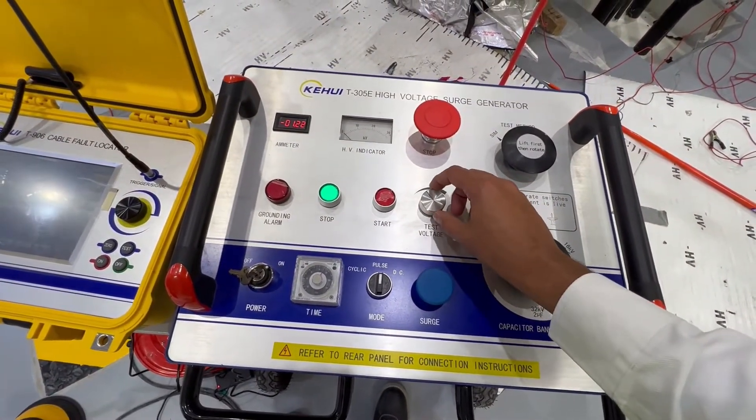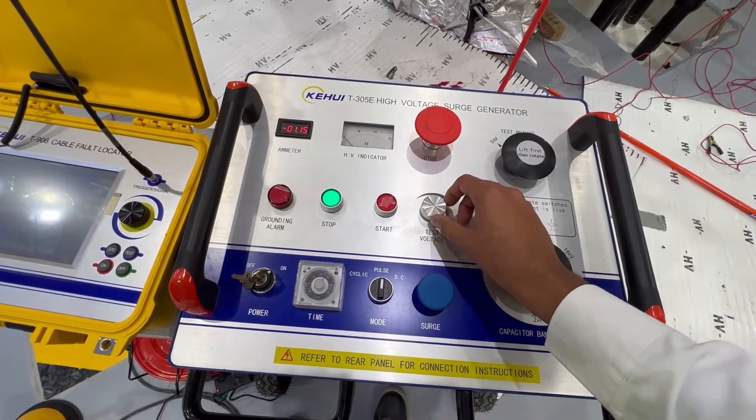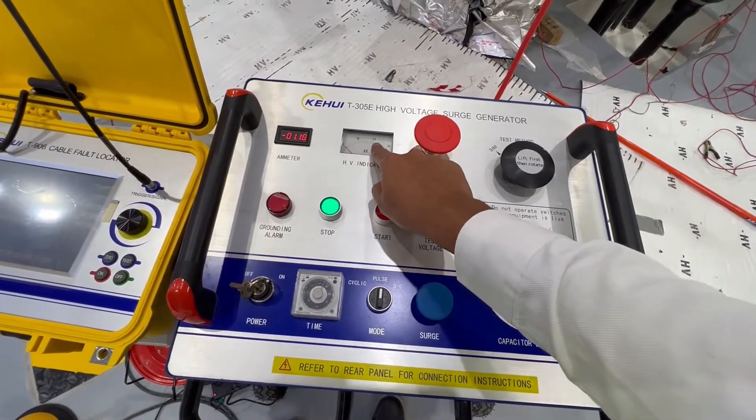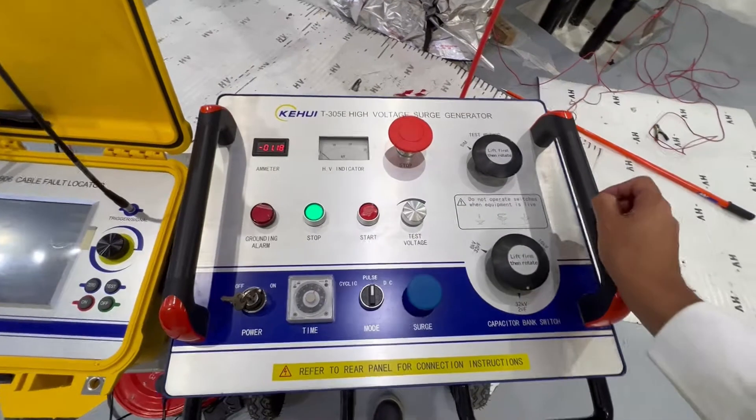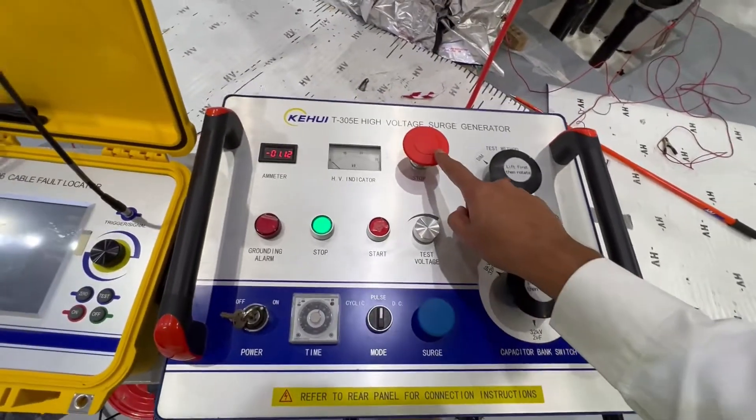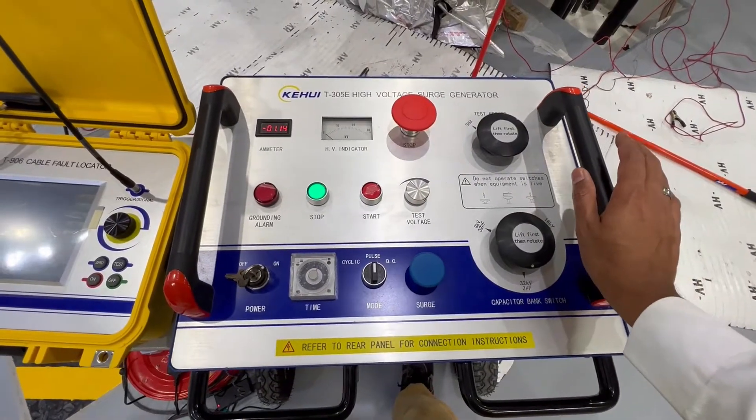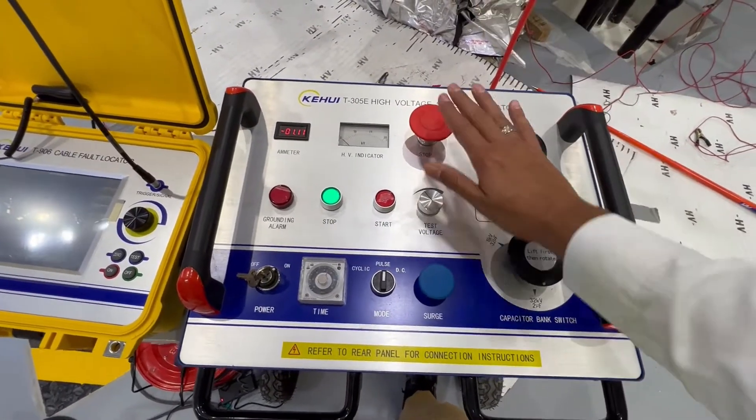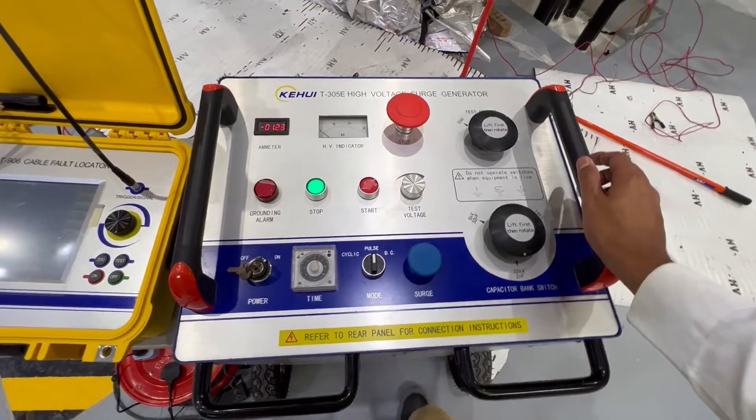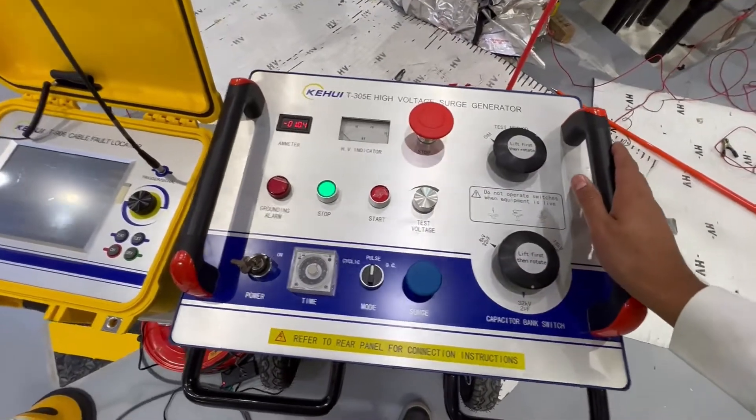There is a test voltage increase regulator which helps you to increase the voltage slowly based on your voltage testing level. This is the emergency switch off button. If there is any emergency, just press this button and all of the voltage gets cut off, so it becomes zero voltage.